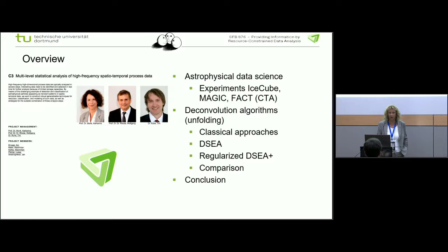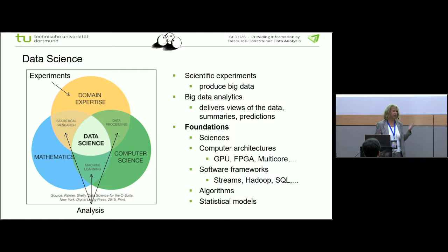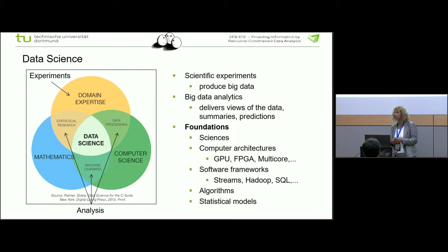A short remark about data science, because there are many different definitions of what data science is. In my view, using this famous picture that has been presented quite often, the particular subject field or discipline that produces the data — that is the domain expertise. There are the experiments that produce the data, and then comes the intersection of computer science, mathematics, and the particular application domain. Then you really have data science. Data science is not only data management or a new way of handling big data — it always needs domain expertise involved.